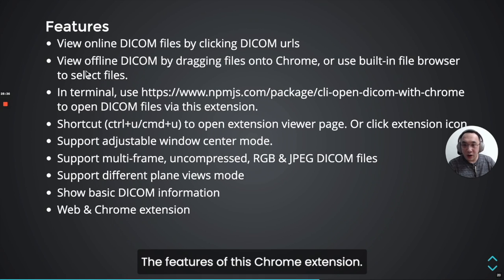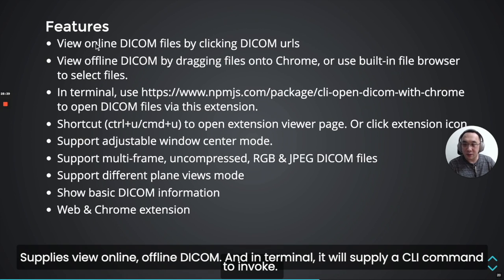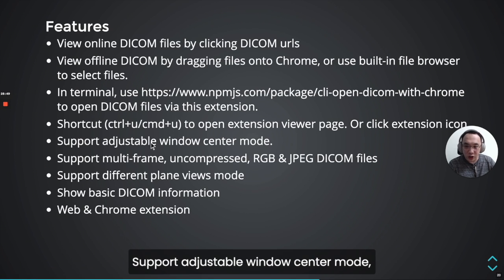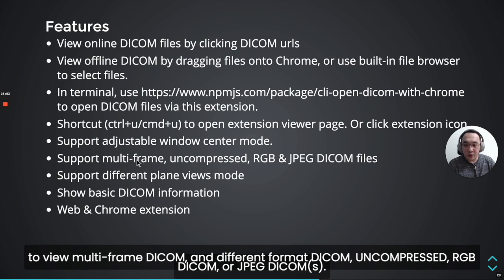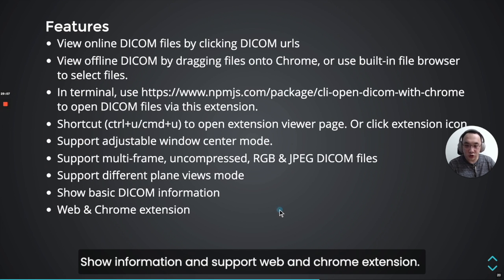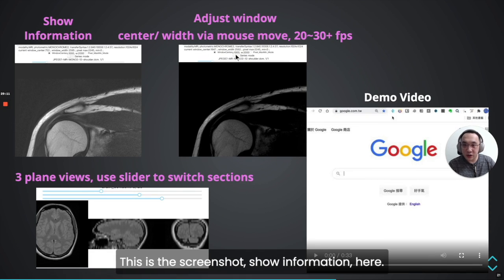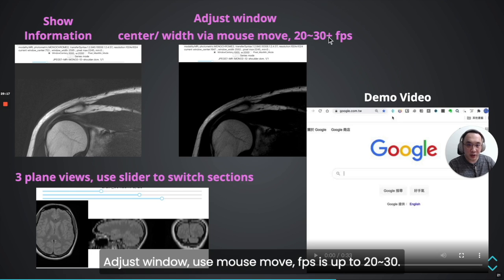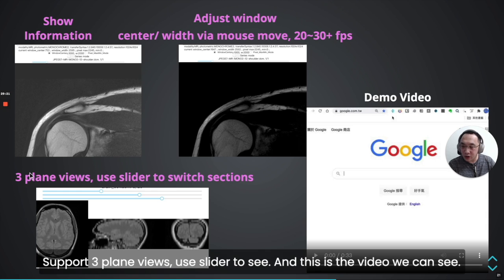The features of this extension: you can view online DICOM files, invoke a CLI command in terminal, and we support adjustable window center mode, viewing multi-frame DICOMs, different format DICOMs, uncompressed and RGB DICOMs. We also support different plane views, show information, and support VS Code extension. This is a screenshot showing information here and adjust window using mouse move. FPS is up to 20 to 30. It supports three plane views with a slider to switch.